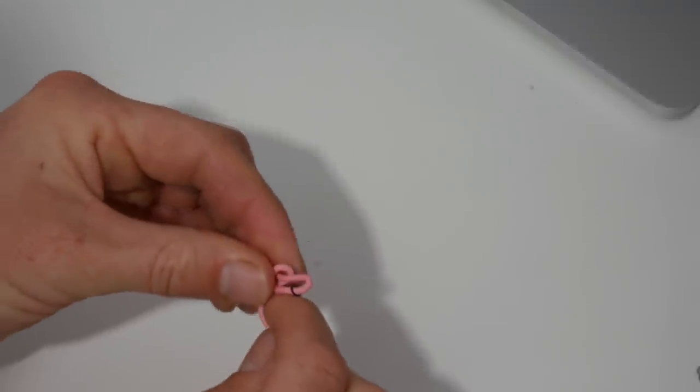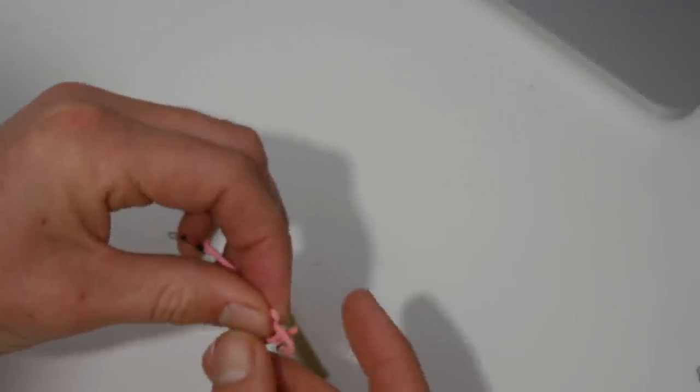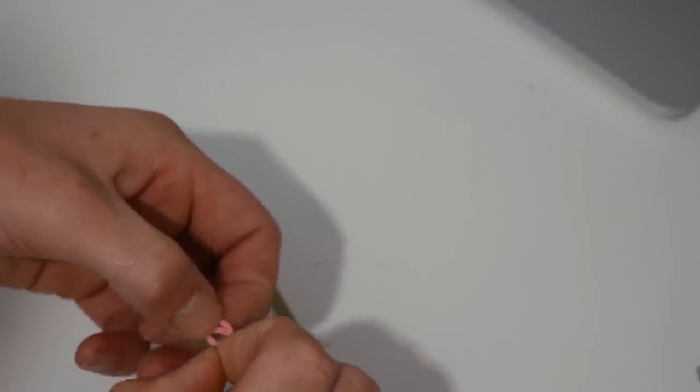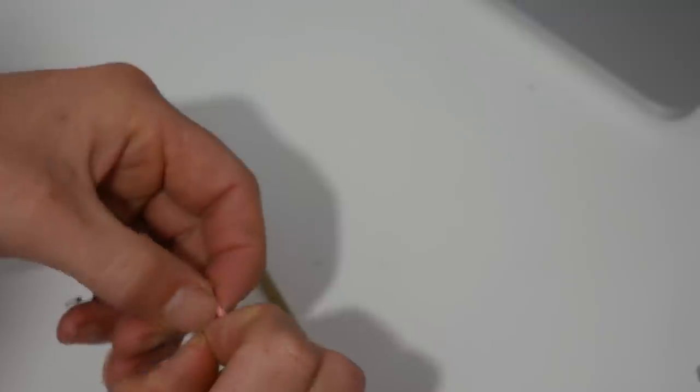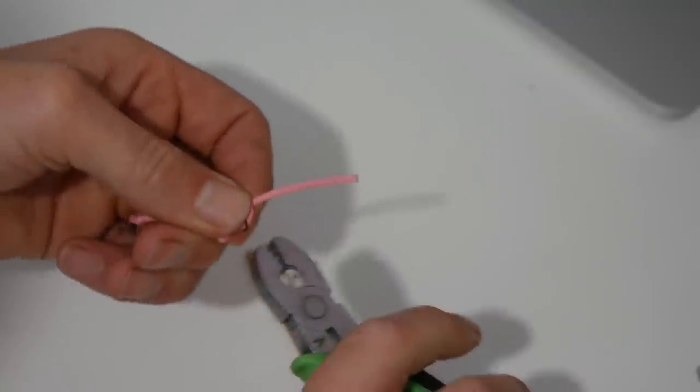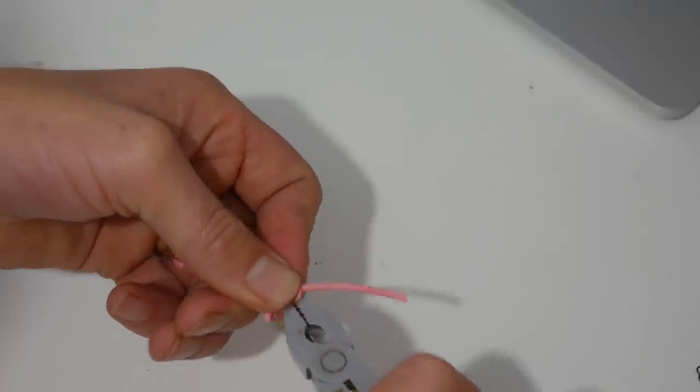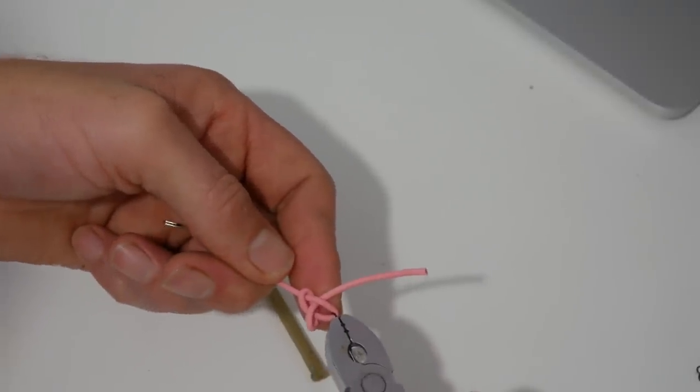So you can see there that that's where we need to tie it. Same situation again, so we're going to go round and through. I'm going to grab that little ring with the pliers. That's actually a crimping tool, the pliers for this. And then pull that tight. Remember to wet it and then pull it tight.